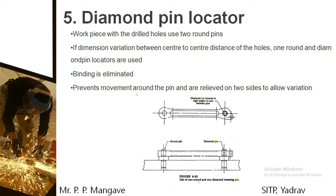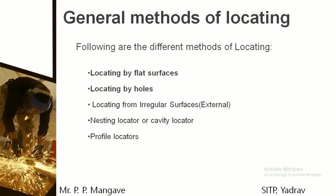So these are the different locating devices. Now coming to the next slide — what are the general methods of locating? Locating can be done by using flat surfaces, by using holes, by using irregular surfaces, by nesting locator or cavity locator, and lastly by profile locators.